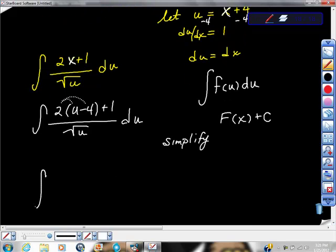We have the indefinite integral. 2 times u is 2u, 2 times negative 4 is negative 8 plus 1 over square root u du. I'm going to keep simplifying. Negative 8 plus 1 is negative 7.